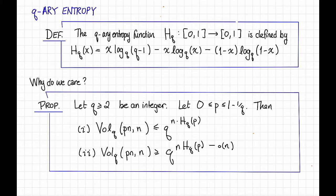More specifically, we have the following proposition. Let q ≥ 2 be an integer, and let p be a number between 0 and 1 - 1/q. Then the following two things are true.